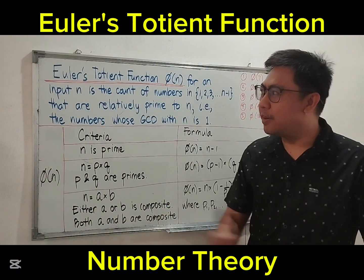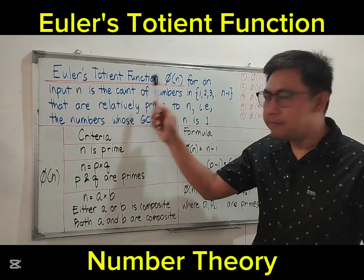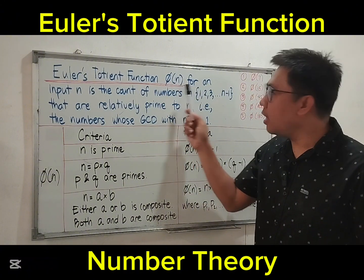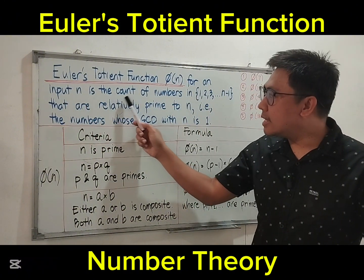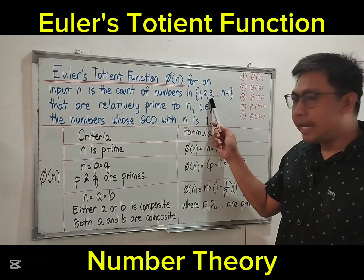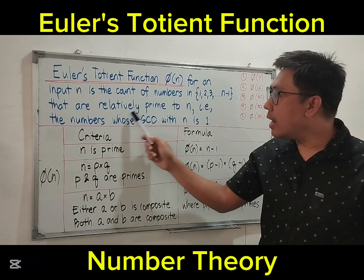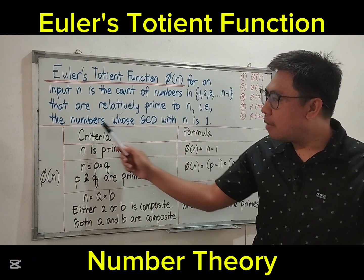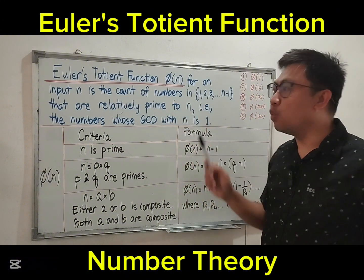Let us define first. Euler's Totient function — the symbol is phi of n — for an input n is the count of numbers in 1, 2, 3 up to n minus 1 that are relatively prime to n. That is, the numbers whose GCD with n is 1.